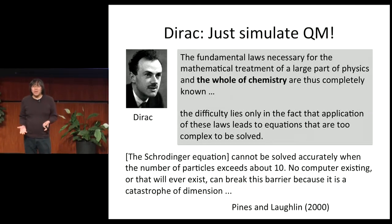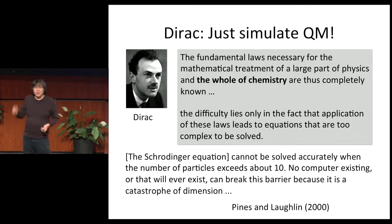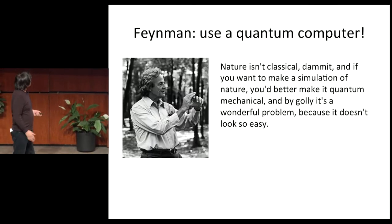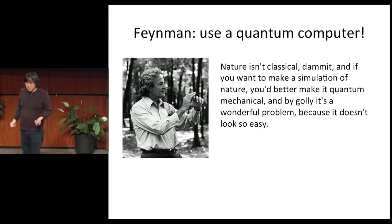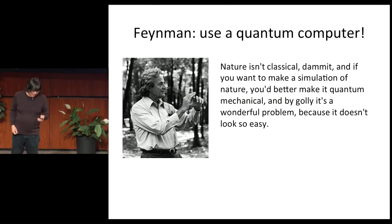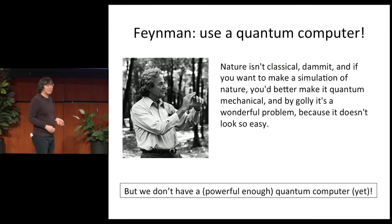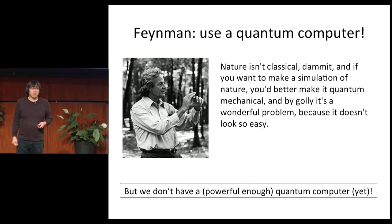This presents a quandary: on one hand, we say we have the fundamental theory of nature; on the other hand, we say we can extract no useful information from it. Feynman said the solution is to solve these equations on the quantum computer — that's a natural thing to do and part of the reason we're here today. But for any problem of real modern-day chemical interest, we don't yet have quantum computers powerful enough in terms of the number of qubits or coherence time.